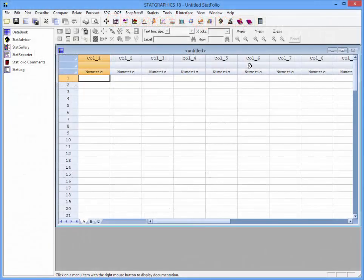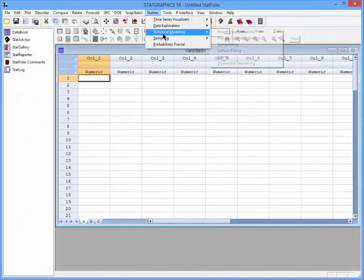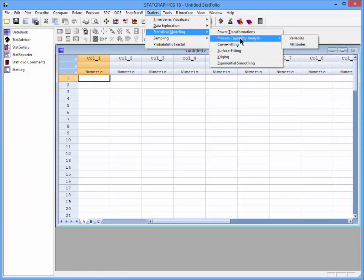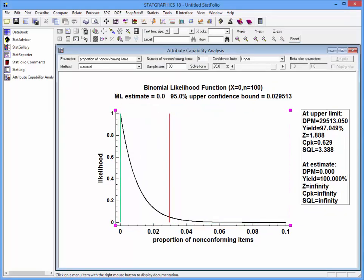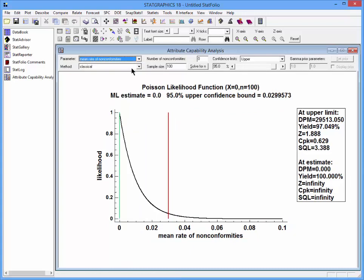To have StatGraphics do the calculations for me, I'll go to Statlets, Statistical Modeling, Process Capability Analysis, Attributes. That will open up an analysis window for me. I'll set the parameter to the mean rate of nonconformities. I'll set the method to classical. I'll set the number of nonconformities to 3. That was the number of fatal accidents. I'll set the sample size to 88,727,394.